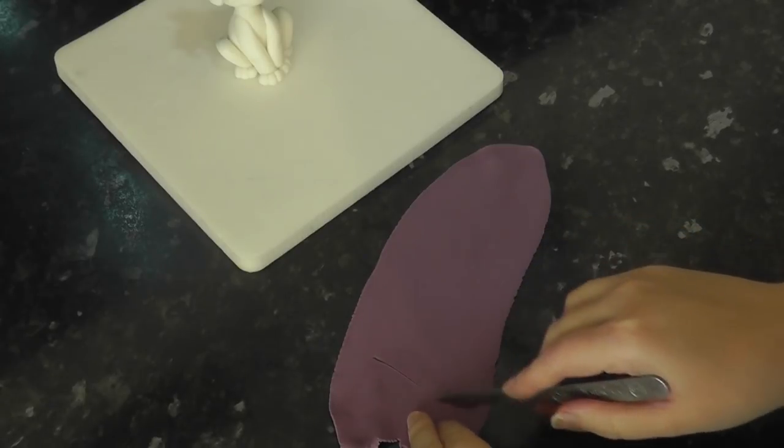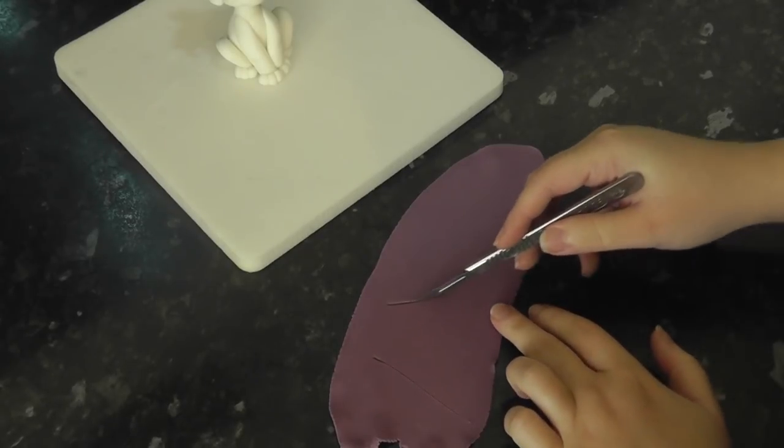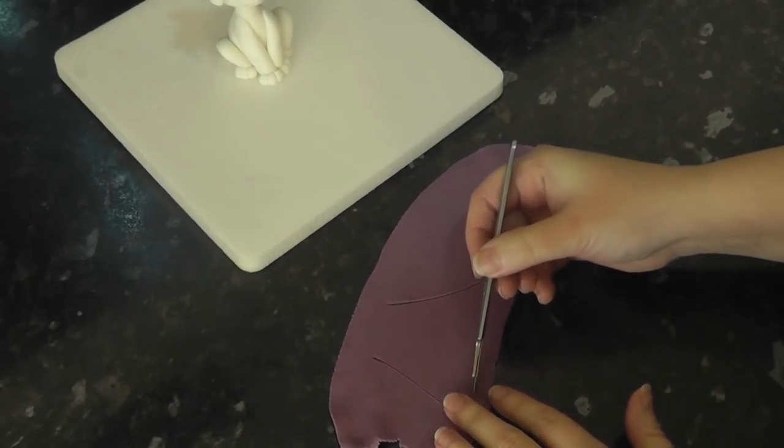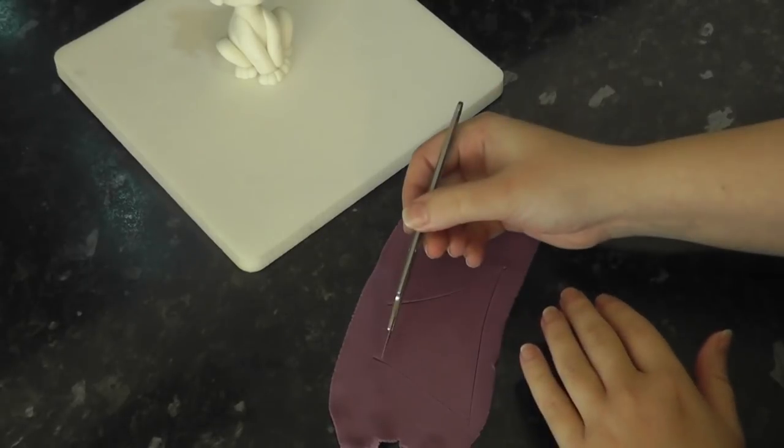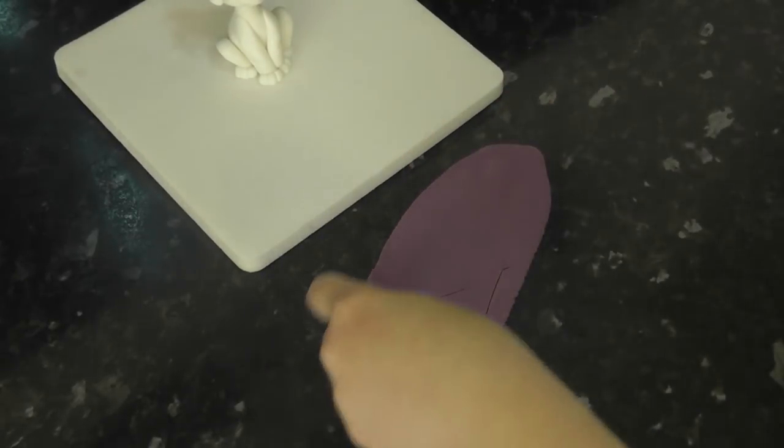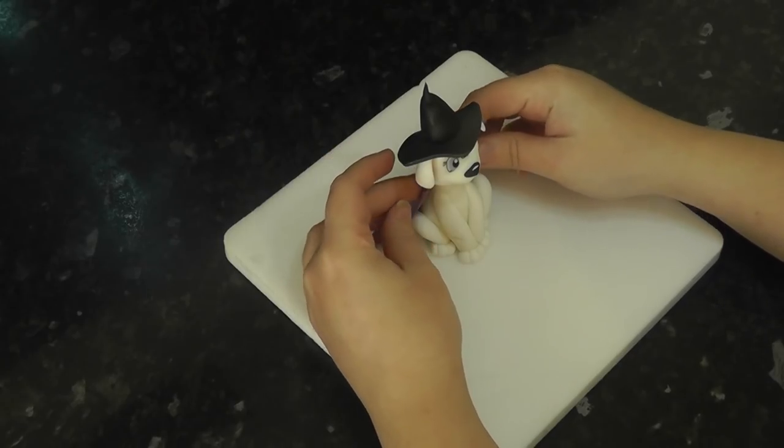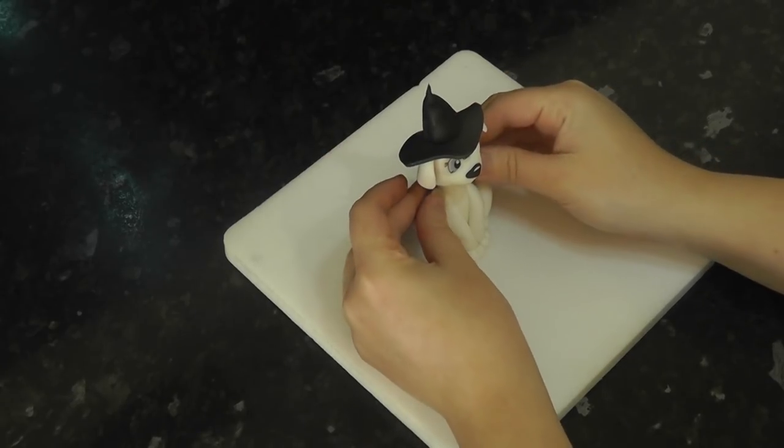For the cape, I've rolled out some purple paste and you just want to cut a trapezoid shape. Yes, that's right. I finally looked it up. A rectangle with angled edges is a trapezoid. This is why you should listen in school kids. Attach this around the back and neck.